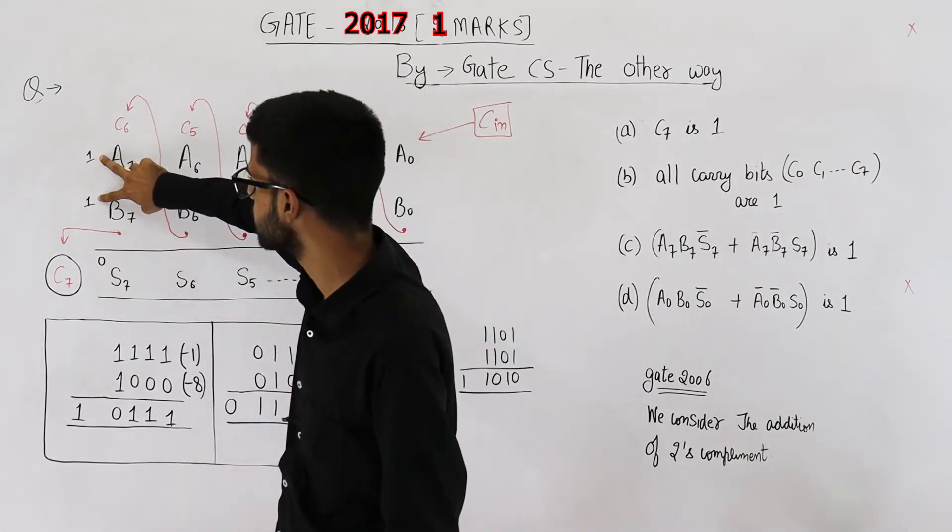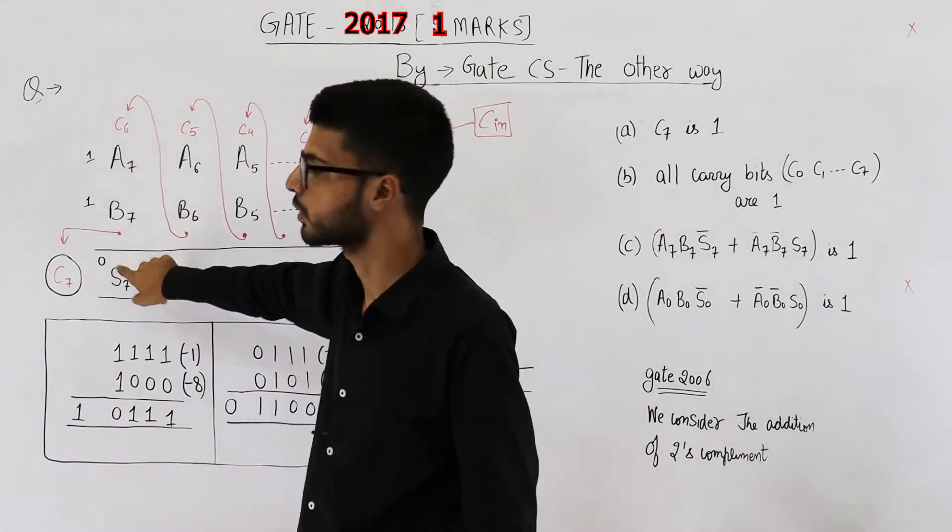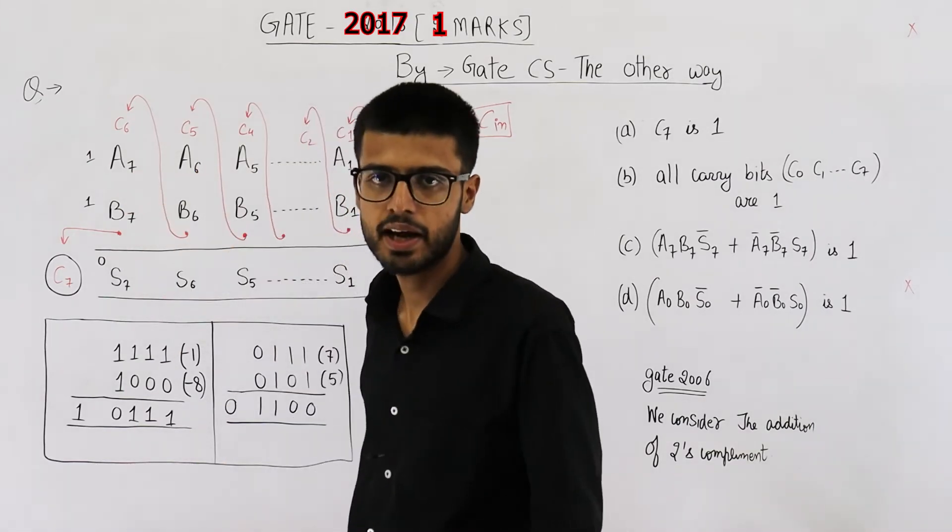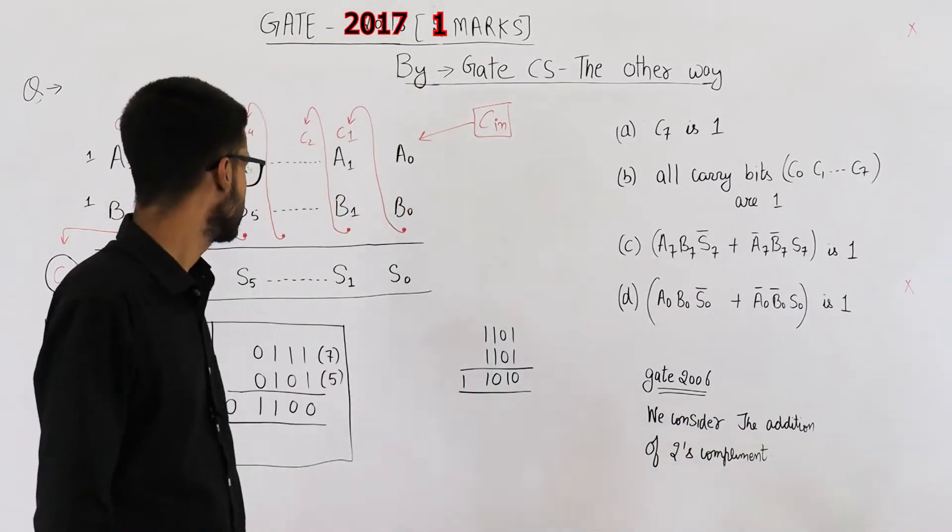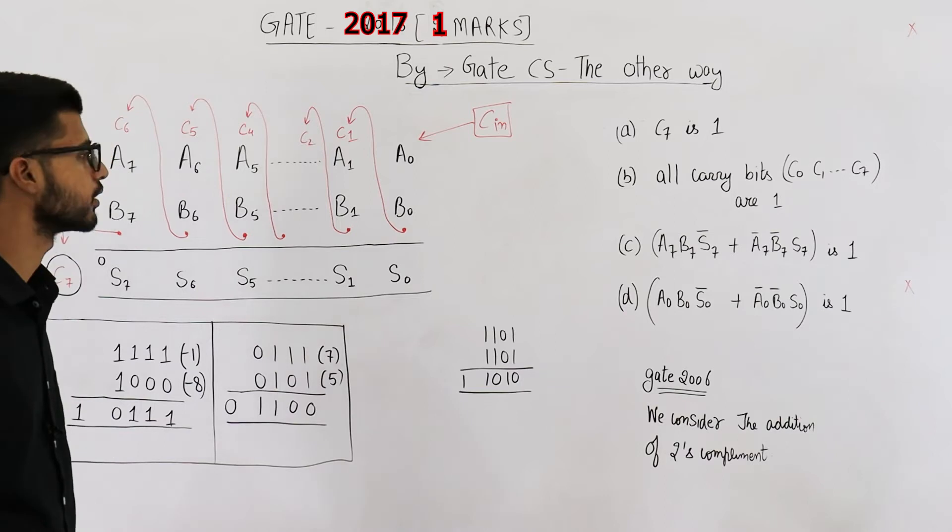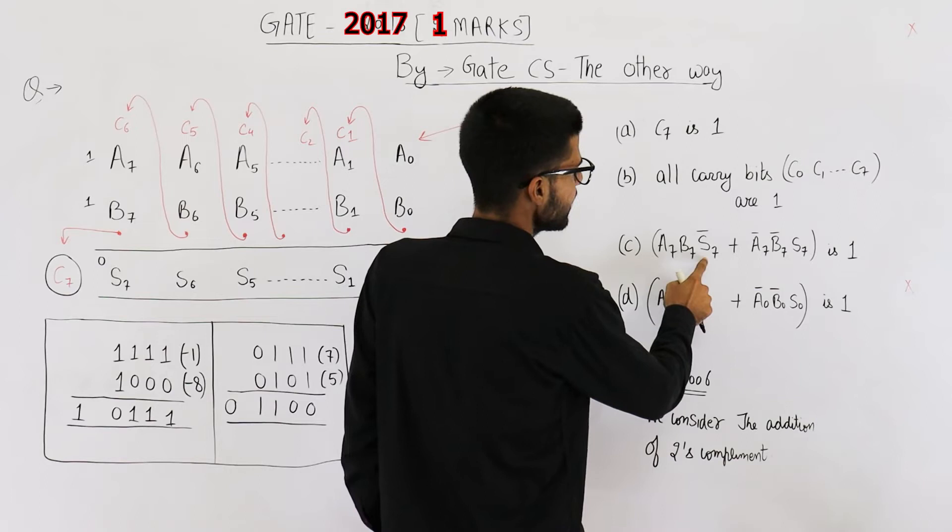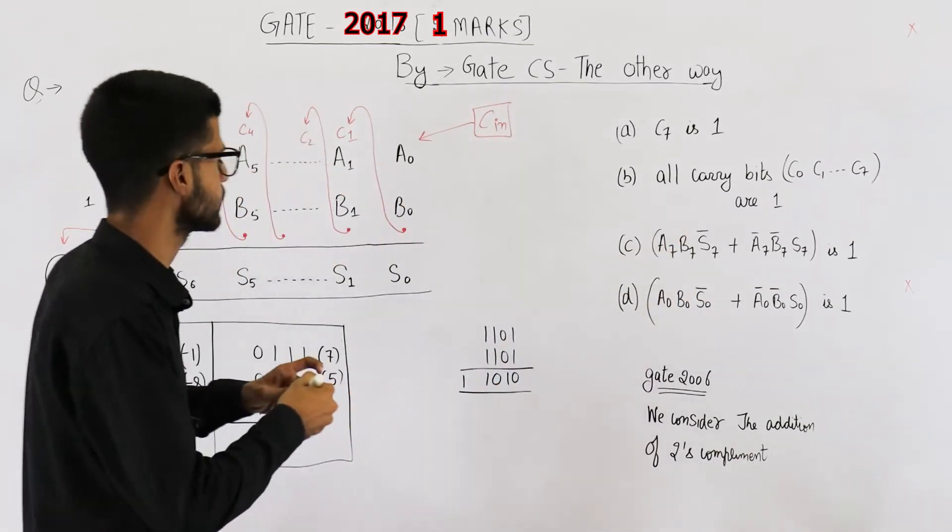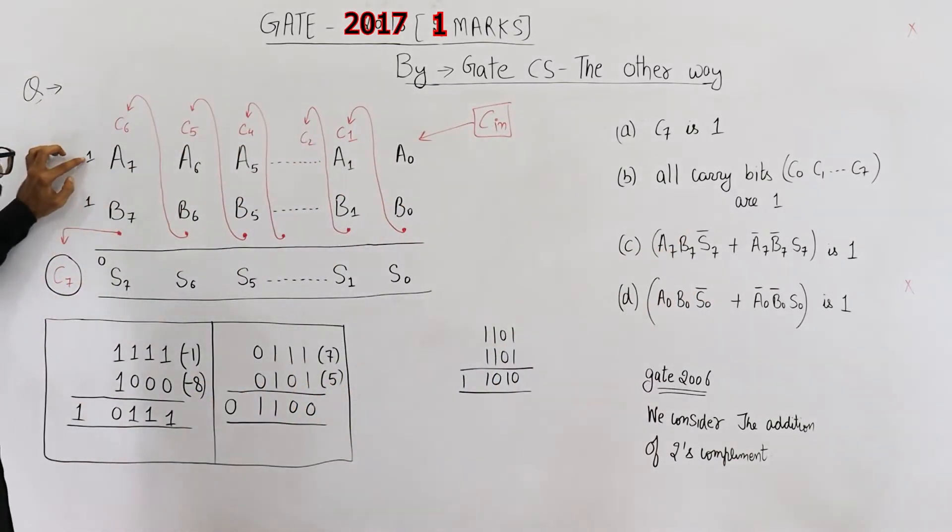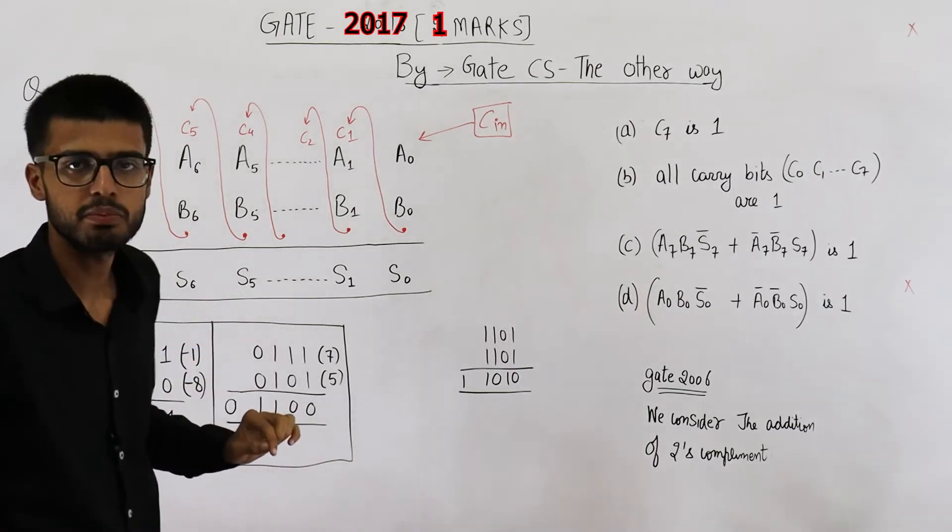Similarly, if both of these are 0 and this one is 1, that means two positives add to a negative. That is also overflow condition. You can see A7, B7, S7 bar. That means A7 is 1, B7 is 1, S7 is 0. So two negatives are added and their sum is positive.